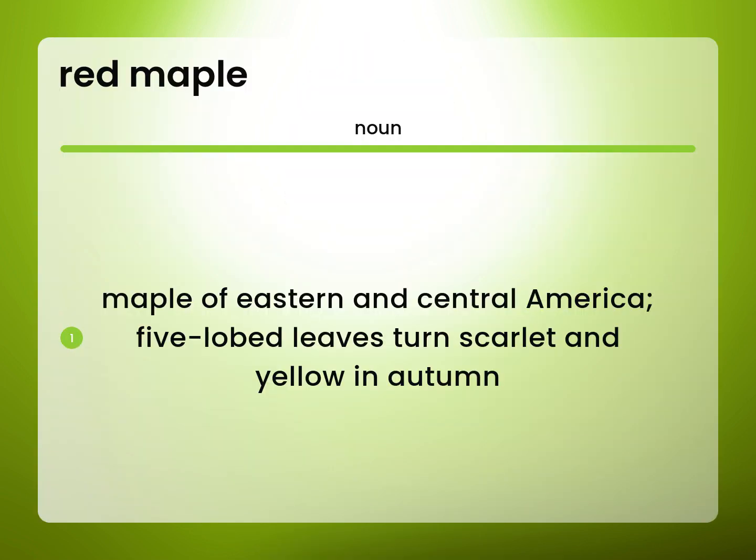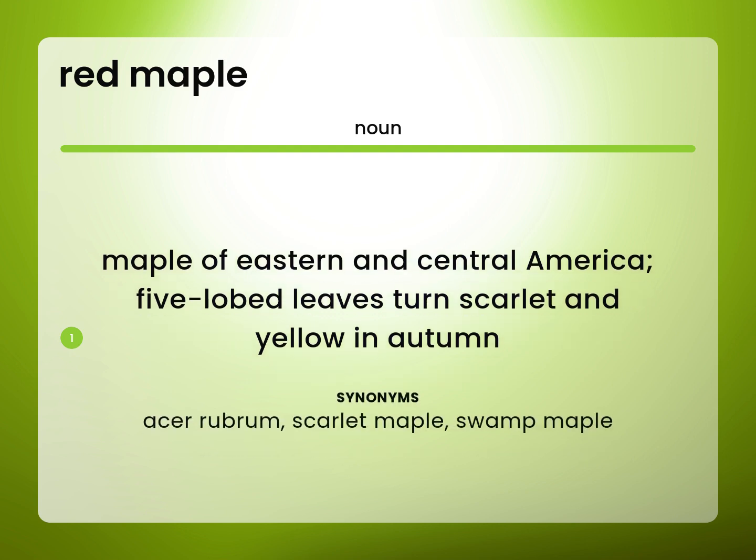Maple of Eastern and Central America. Five lobed leaves turn scarlet and yellow in autumn. Acer rubrum. Scarlet maple. Swamp maple.